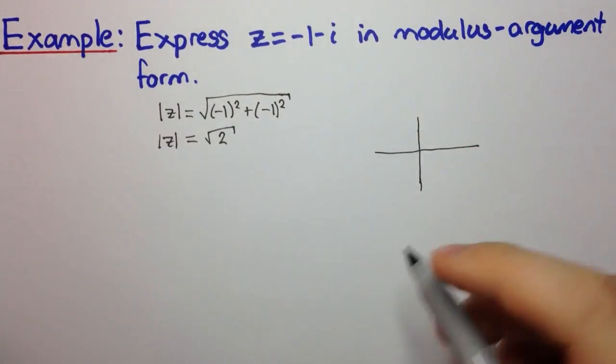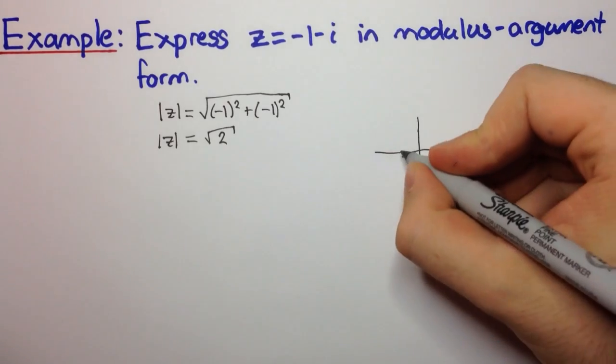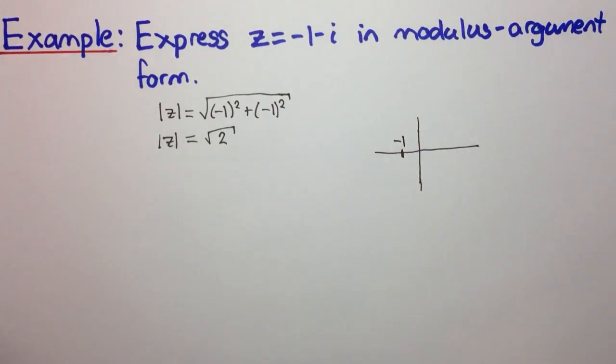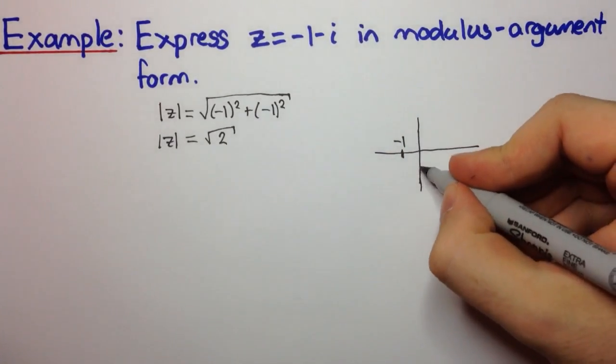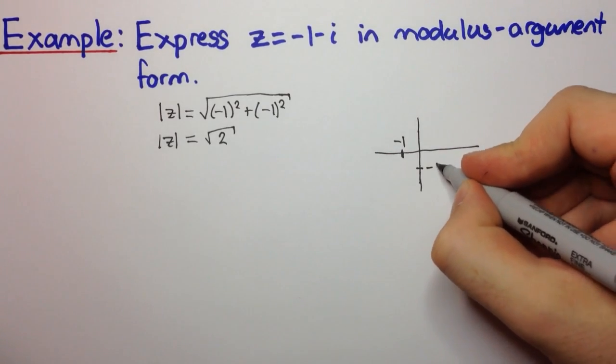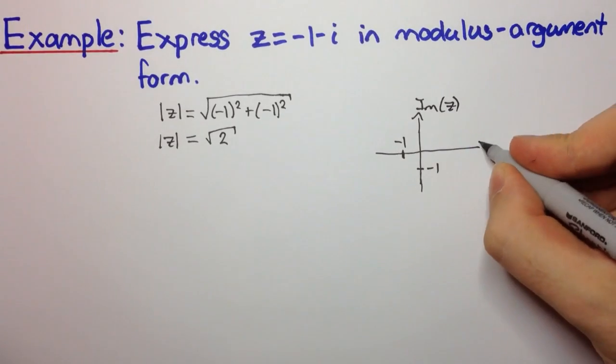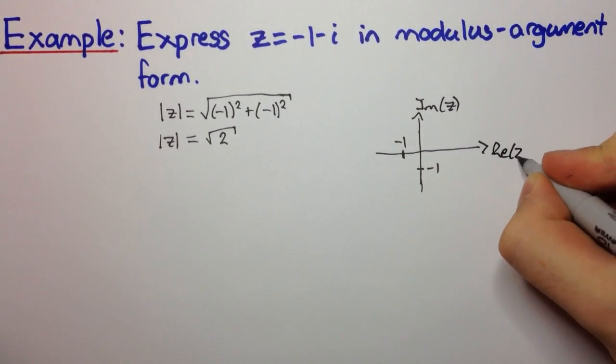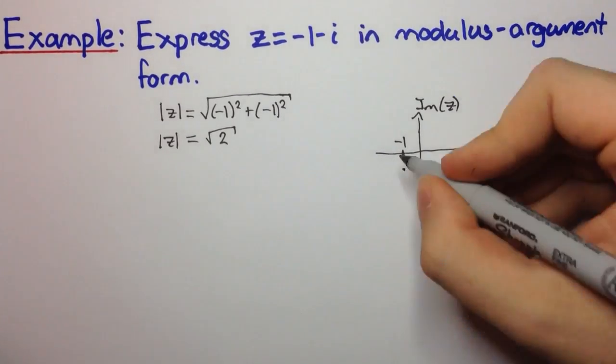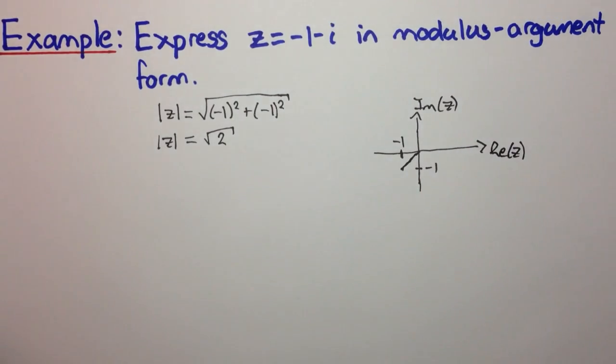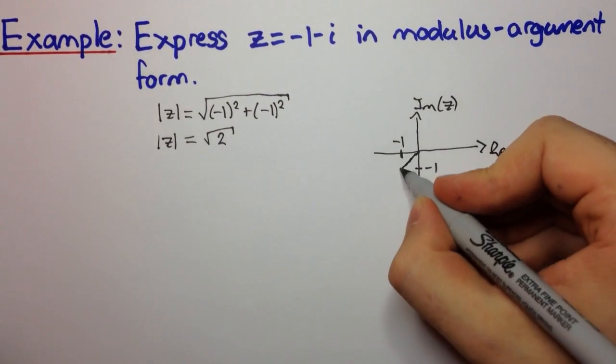So we're going to be minus 1 across on the real axis, so that's minus 1, and we're going to be minus 1 down on the imaginary axis. So there's minus 1. So we have our imaginary axis and our real axis, and this is where we are. We're at that point there. This is z.